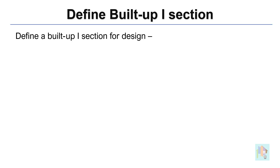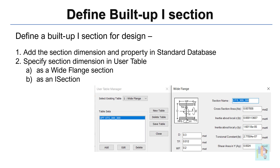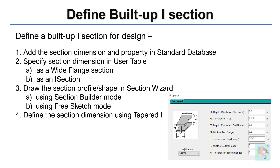There are 6 different methods available in STAAD by which we can add a user-defined or built-up I section. We can add it directly in the standard section library by specifying the dimension and properties. We can create a user table section with section type wide flange or I section and specify the dimensions. We can also draw the profile in section wizard or in the free sketch mode and import that in STAAD as a general section with equivalent I section dimensions. Finally, we can define it as a tapered section with same or different start and end depth. Each of these methods has some advantages and disadvantages.